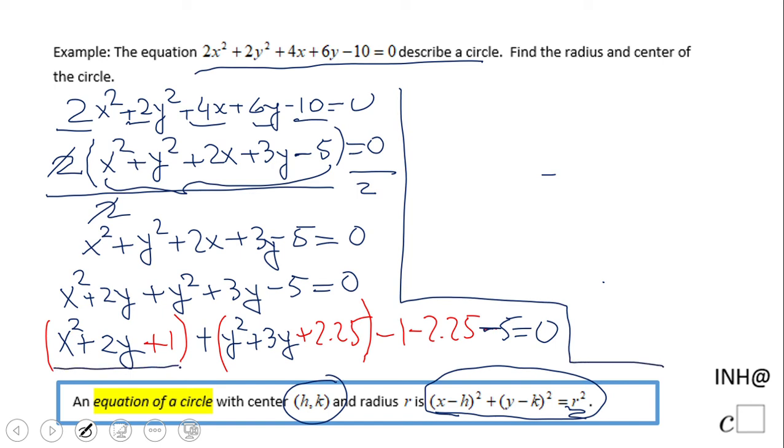So now what do we have here. This guy here, we complete the square, it's going to be x plus 1 squared. This second guy, if you remember, 1.5 squared was 2.25, so that will be y plus 1.5 squared. And here we have negative 1 minus 2.25, that is negative 3.25, minus 5, minus 8.25 equals 0.